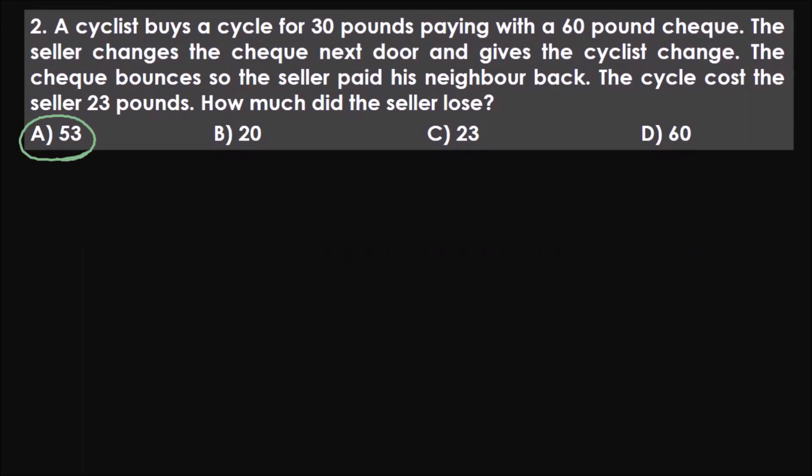For these kinds of problems, you'll find plenty of different solutions online, but the easiest one I've found goes like this: you just track the seller and how much money he receives and how much he loses — you add and subtract accordingly. So we have the seller here.